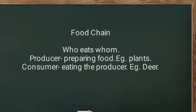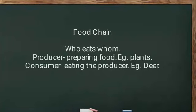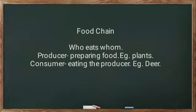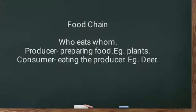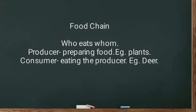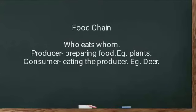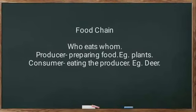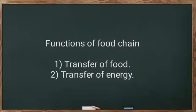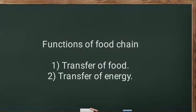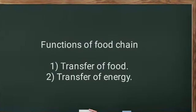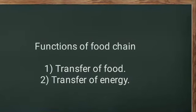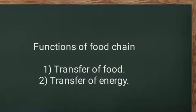Food chain gives us an idea about who eats whom. There are two parts in a food chain: one is producer, and second is consumer. Producer means they prepare the food — example, plants. Consumer means they feed on the producer — example, deer and other animals. A food chain mainly has two functions: transfer of food from one to other, and transfer of energy from one to other.